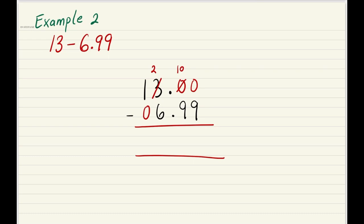Zero becomes 10, and we need to get the last number bigger than 9. So we're going to borrow from here again. Make the 10 a 9 and the 0 a 10. Ten minus 9 is 1. Nine minus 9 is 0. Always remember to bring down the decimal point. Two minus 6, it's impossible. Let's borrow from here. One becomes 0. Two becomes 12. Twelve minus 6 is 6, and 0 minus 0 is 0. So for the question 13 minus 6.99, our answer is 6.01.